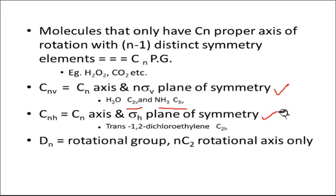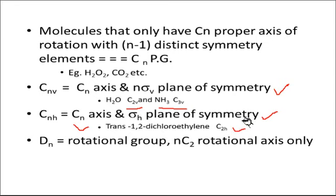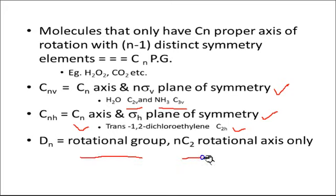If there is a horizontal plane of symmetry σH along with a Cn axis — for example, trans-1,2-dichloroethylene — then the point group is C2H. And if there is a Cn axis and C2 rotational axes only, then the point group will be Dn.